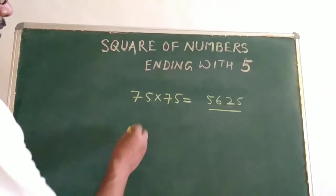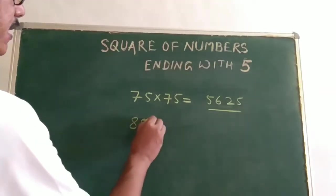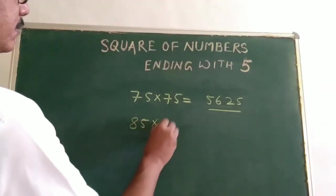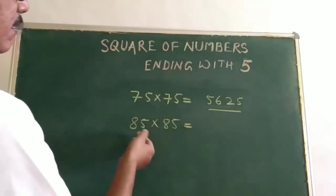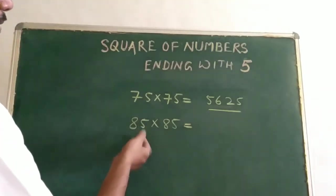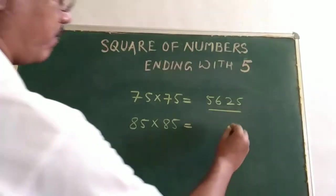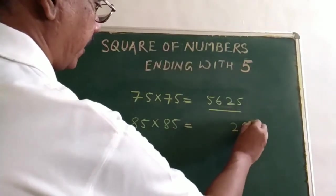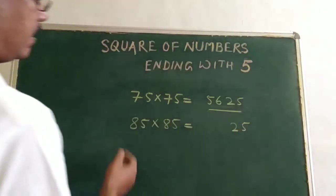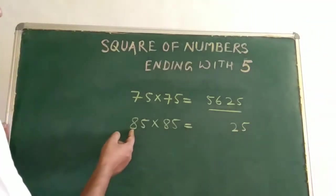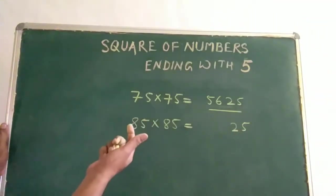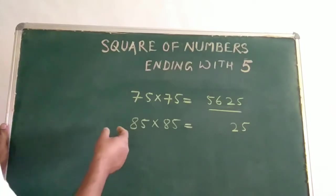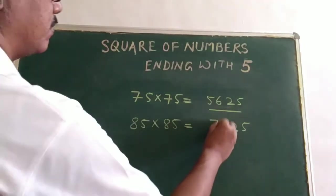You have to find out the square of 85. Same way, the first number is 5, so write down the square of 5 which is 25. The next number is 8. What is the next number after 8? That is 9. So 8 times 9 is 72. So the square of 85 is 7,225.